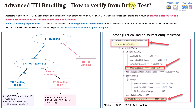Let's now check how to confirm from logs whether TTI bundling or Advanced TTI bundling is being activated. The eNB will first check whether the user meets the TTI bundling condition, which is based on the uplink radio condition — the SNR. If the user does not meet the threshold, TTI bundling will not be triggered and the eNB will not schedule that user for TTI bundling.